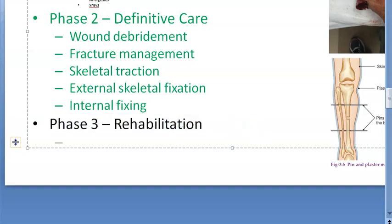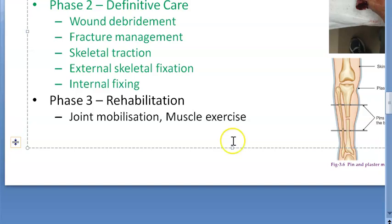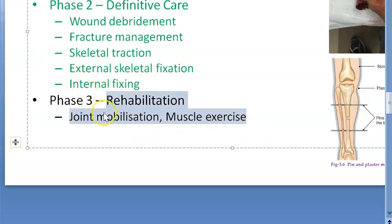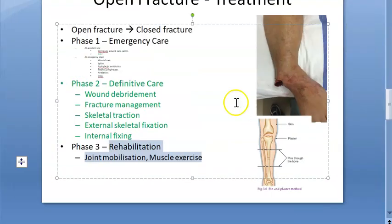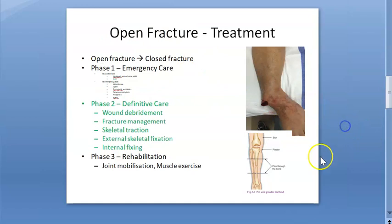Phase three is rehabilitation. This includes joint mobilization, muscle exercises, and mobilization of the injured limb to help the person get back to life. This should ideally happen in parallel with definitive care - once the splint is applied, you teach patients how to maintain it, manage it, and work the muscles trapped inside the splint.